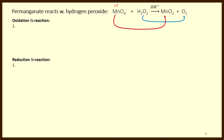The manganese atom in permanganate has oxidation state plus seven, and in manganese(IV) oxide it's plus four. The oxygen atom in peroxide has an oxidation state of negative one, and of course it's zero in the element. Each manganese atom is gaining three negative charges as it goes from plus seven to plus four — gaining three electrons — and a gain of electrons is reduction. At the same time, each oxygen atom in peroxide is losing one negative charge, or losing one electron as it goes from negative one to zero, and a loss of electrons is oxidation.